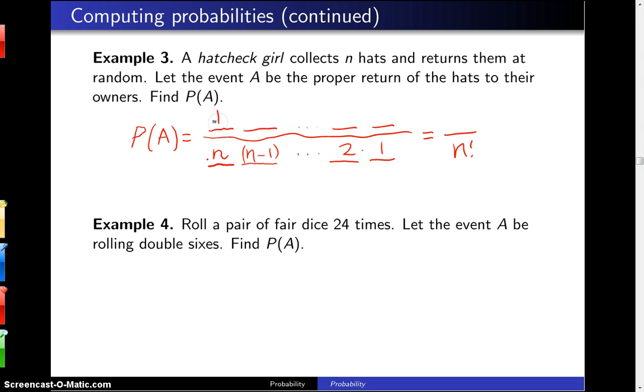For the first hat, there's only one way to return it correctly - the right hat to the right owner. For the second hat, one way to return it correctly, and so on. By the multiplication rule, we have one on top, giving us the solution: 1 over N factorial.